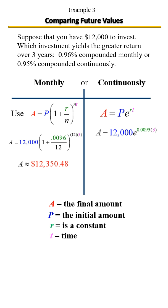We're going to take our calculator and enter 12,000, then press the E key, raise that to the 0.0095 times three, press enter. And here we have our value.